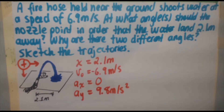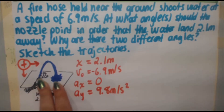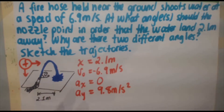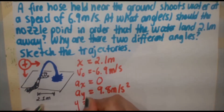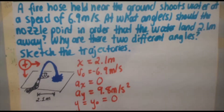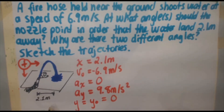Because the water starts and stops at the same vertical height, y equals y-naught, which is zero — that's our zero height reference. There's no acceleration in the x direction.